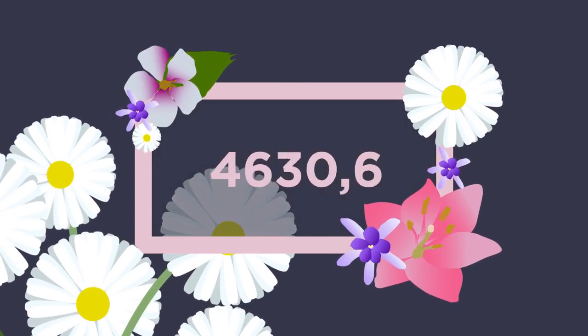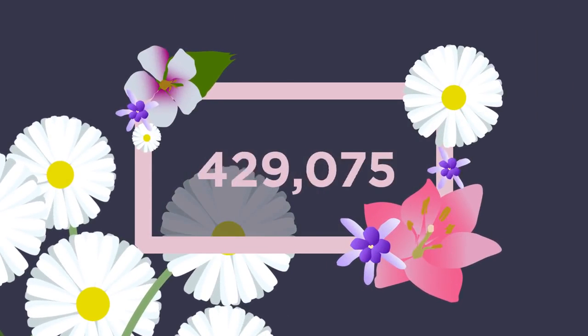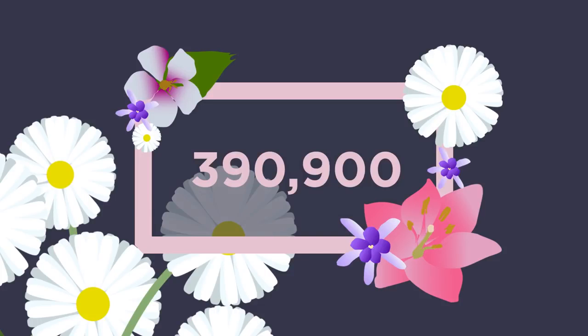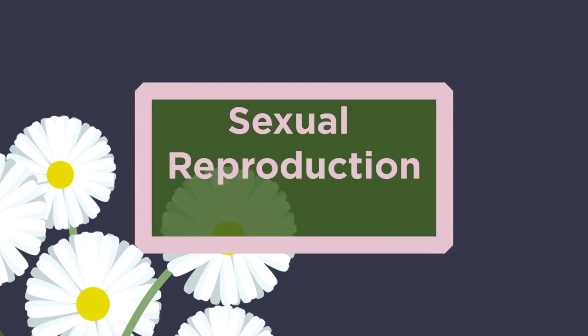In this video we will be looking at sexual reproduction in plants. Did you know that there are an estimated 390,900 plant species known to science? This diversity of plant species is in part due to sexual reproduction.